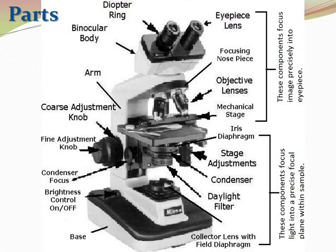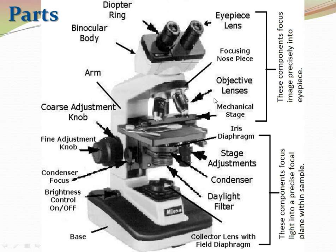Different parts of the microscope can be divided into two major groups by function. The upper part focuses the image into the eyepiece, and includes eyepiece, focusing nosepiece, objective lenses, mechanical stage, binocular body, and diopter ring. The lower part focuses the light on the specimen, and includes light source, base, brightness adjustment, condenser adjustment, stage adjustments, diaphragm, condenser, and fine and coarse adjustment knobs.